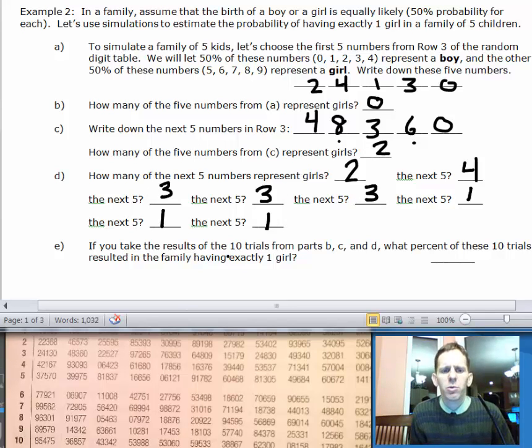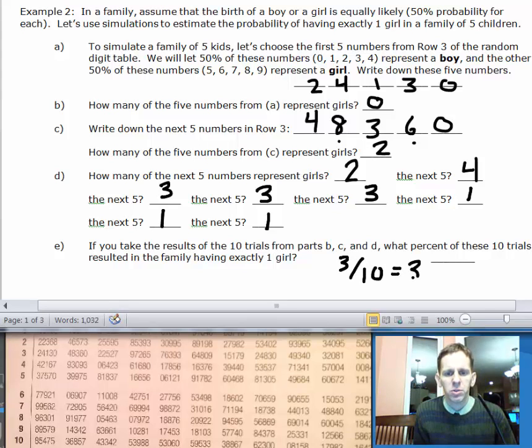For Part E, if you take the results of the 10 trials from Parts B, C, and D, what percent of these 10 trials resulted in the family having exactly one girl? Well, I see that we came up with 1 girl the last 3 trials, here, here, and here. Other times, we got 0, 2, or 3 girls. But 3 times, we got exactly 1 girl. So, we're going to say that 3 out of 10 of these trials, which equals 30%, resulted in the family having exactly 1 girl.